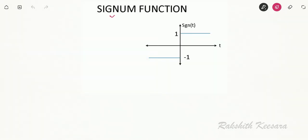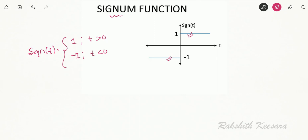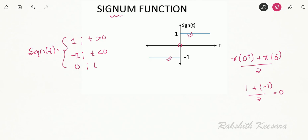The next function is the signum function. It is 1 for positive values of t and minus 1 for negative values of t. I can write sgn(t) equal to 1 for t greater than 0, and minus 1 for t less than 0. At t equal to 0 it is discontinuous, so we use the Heaviside property: [x(0+) + x(0-)] divided by 2. x(0+) is 1 and x(0-) is minus 1, so the result is 0. I can also represent this function as sgn(t) equal to u(t) minus u(minus t).